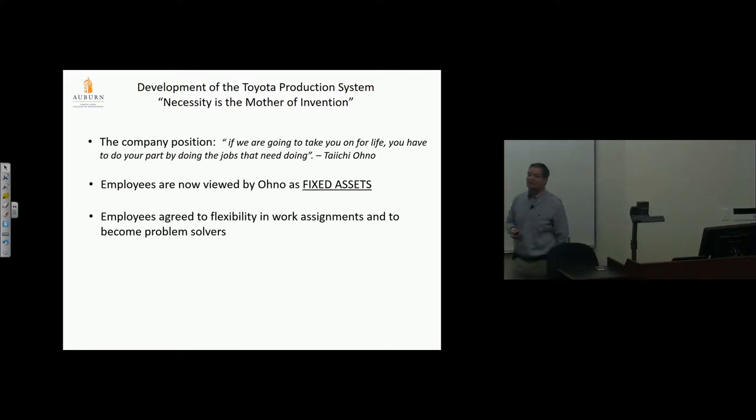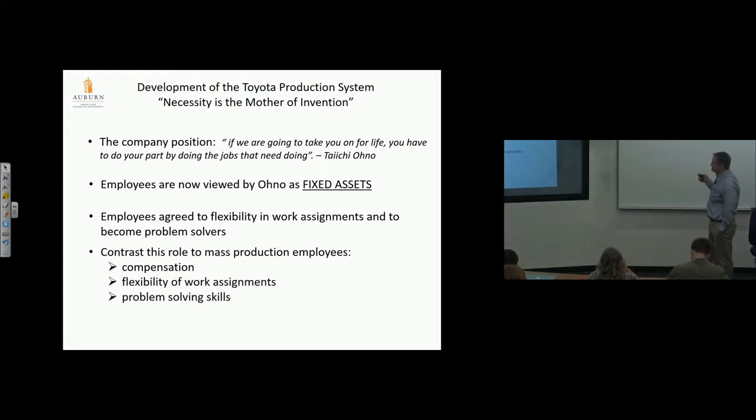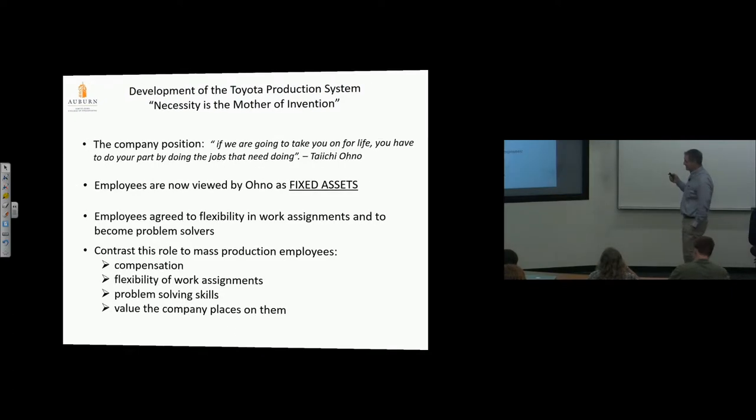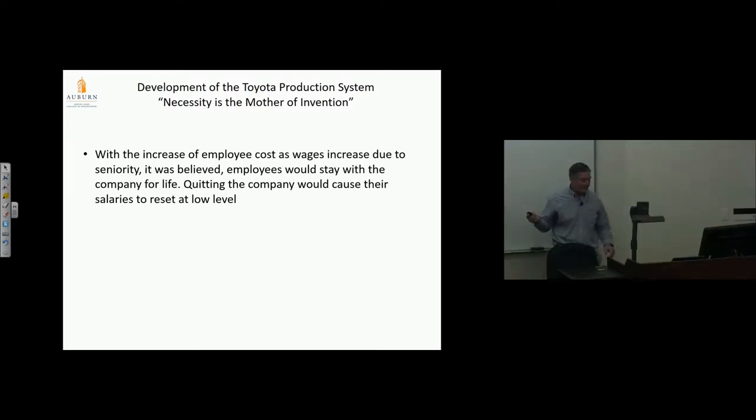Employees agreed to flexibility in work assignments and to become problem solvers. Contrast this to mass production employees—think about compensation. Everybody walks in, they all make the same amount, they have no say in anything. With increased employee cost as wages increased due to seniority, employees would stay with the company for life. Quitting would cause salaries to reset at low level, so they didn't worry about losing talented employees.